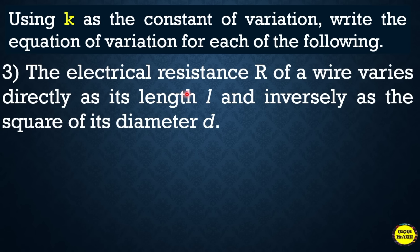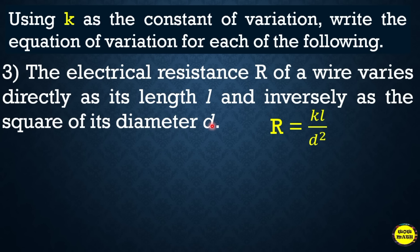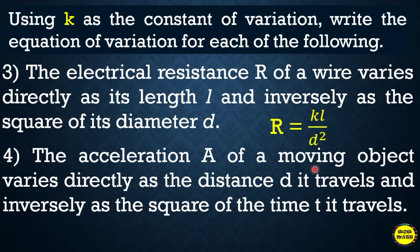Example 3: The electrical resistance R of a wire varies directly as its length L and inversely as the square of its diameter D. Since 'square of its diameter' gives D², the equation of variation is R = KL/D².